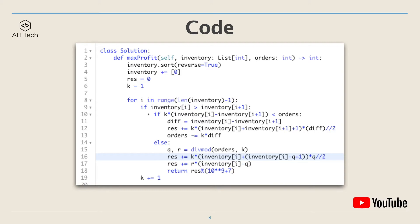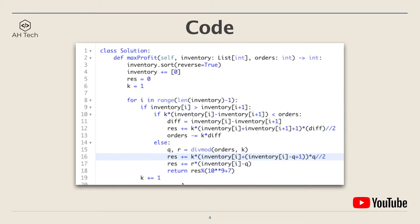Going through the array, if the current color has more balls than the next color, we first check if we have enough orders to make this many transactions. If we do, we define div as inventory[i] minus inventory[i+1], and the total value from this transaction is the arithmetic series sum. We subtract orders by k times div. If we don't have enough orders, we calculate the quotient and remainder of orders divided by k, add the arithmetic sum to result, and then the remainder to result as well. Finally we return result modulo 10 to the power of 9, and at the end of the for loop we increment k.